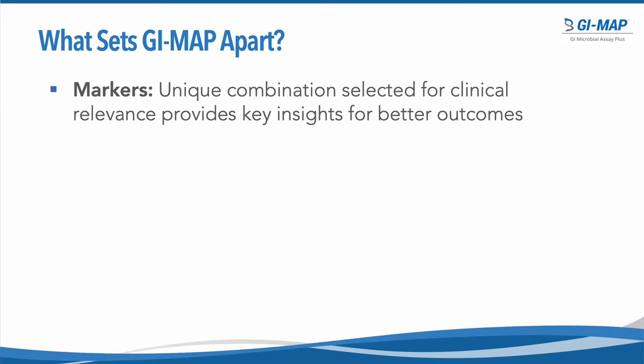When practitioners are considering options for comprehensive gastrointestinal testing, it's important to understand what sets GI Map apart. This essentially boils down to three main categories, the first of which is the unique set of markers that comprise GI Map. These were specifically selected for their clinical relevance in helping to provide clinicians with key clinical insights for better patient outcomes.